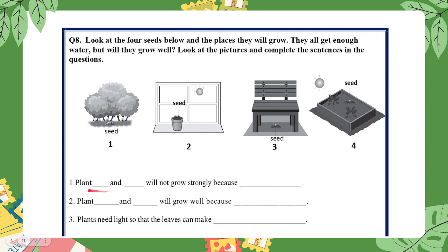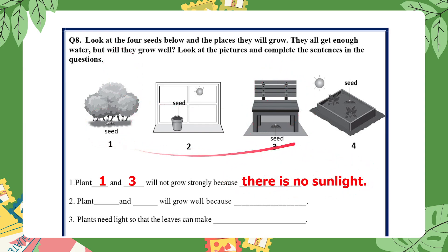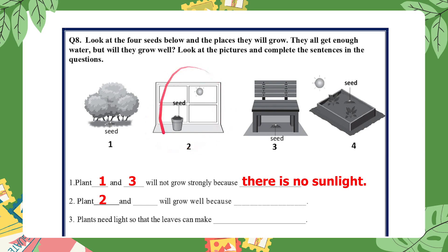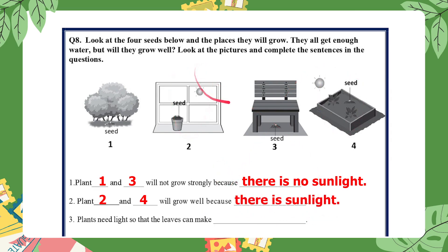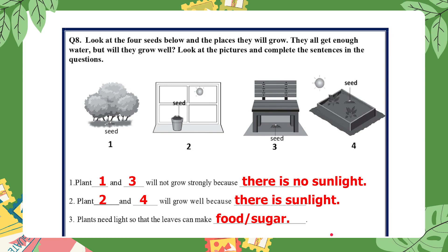Plants one and three will not grow strongly because there is no sunlight — the tree in picture one is blocking the sunlight, the same as the chair in picture three. Seeds two and four will grow well because there is sunlight — seed two near the window can get enough sunlight, and seed four is on the plant box. Plants need light so that the leaves can make food, which is sugar.